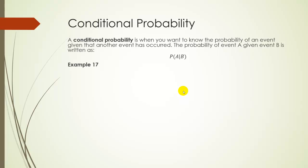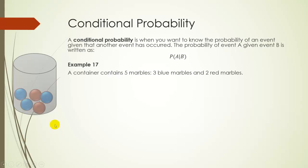So for example, suppose we have a container that has 3 blue marbles and 2 red marbles. So if we randomly pull a marble from this container, what's the probability it's red? Well, there are 2 red marbles out of 5 marbles, so it would be 2 out of 5.